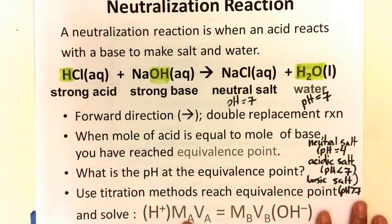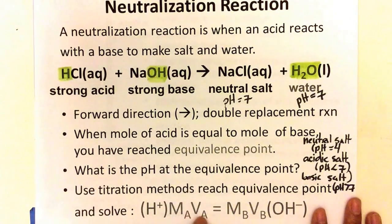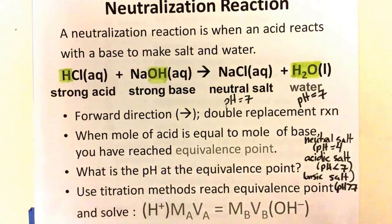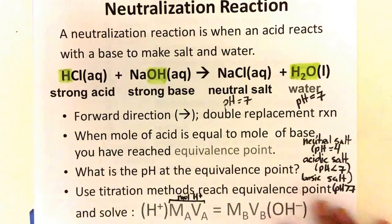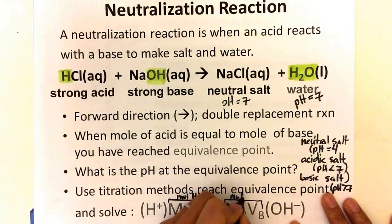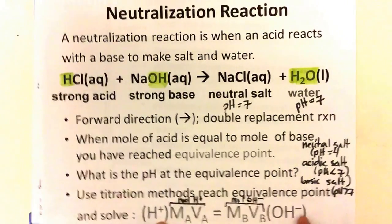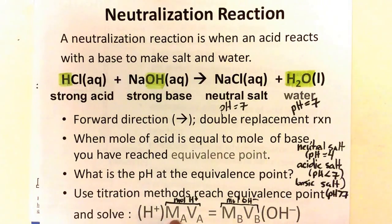Here you have molarity of acid times volume of acid. Multiplying these two, you get moles of your H+ ions, which is your acid. These two represent the number of hydrogen ions that that acid can contribute. If the acid is monoprotic, then you multiply it times one. If it's diprotic, then you multiply it by two. If the acid is triprotic, you'll have to multiply this side by three.